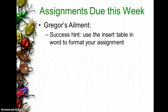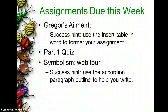So let's talk about your assignments. There's going to be one called Gregor's Ailment, and I'm going to show you how to insert a table that will make your assignment a little easier. You're going to want to do the part one quiz, which is just comprehension on part one. And then you're going to want to do the symbolism. I did do a paragraph outline for the accordion paragraph that I think will help you.